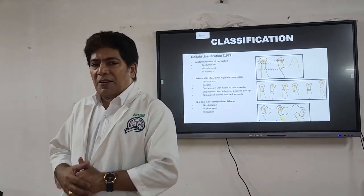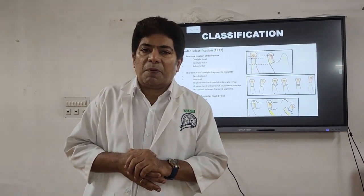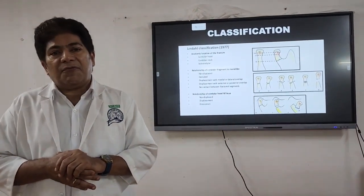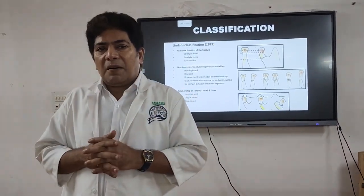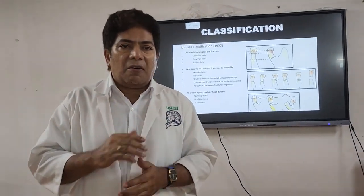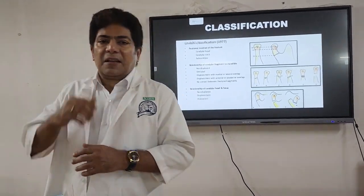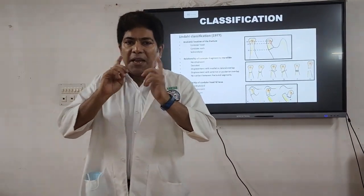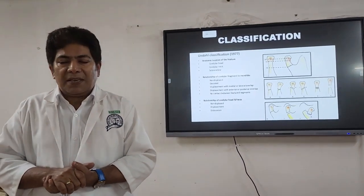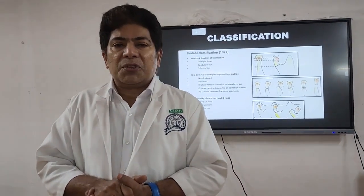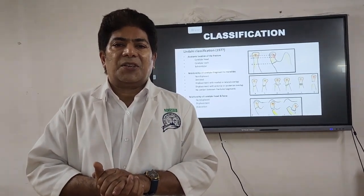In case of bilateral condylar fracture, there will be posterior premature contact with anterior open bite. This is mainly because of the lack of vertical height of the ascending ramus. When there is a condylar fracture, the fulcrum moves anteriorly towards the third molar region, so when the patient opens or closes, there is premature contact and an anterior open bite — a classical clinical symptom of bilateral condylar fracture.